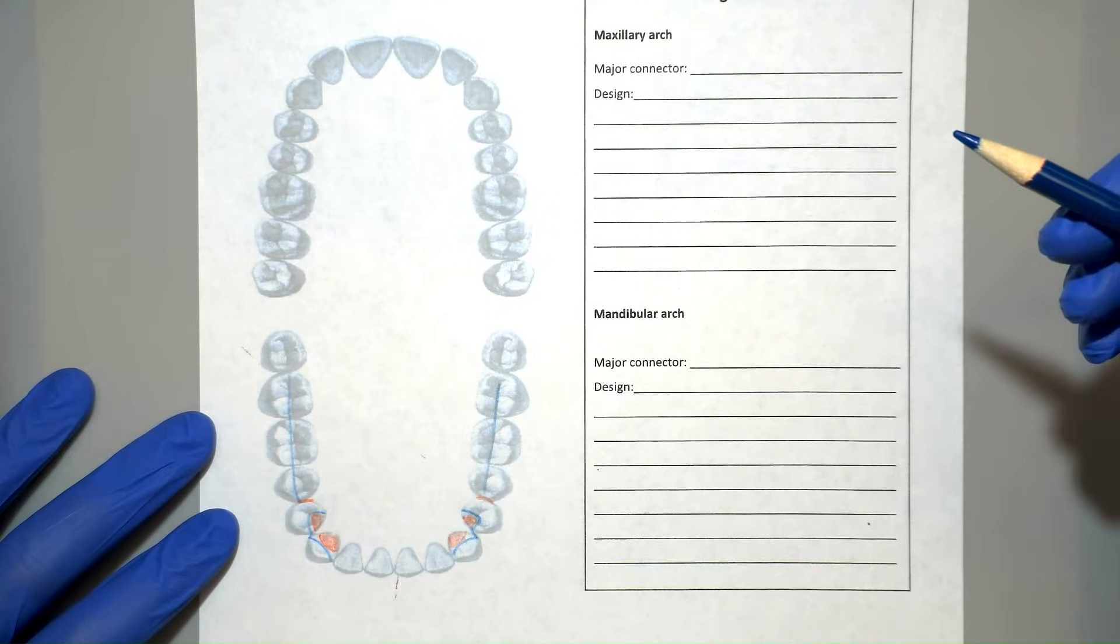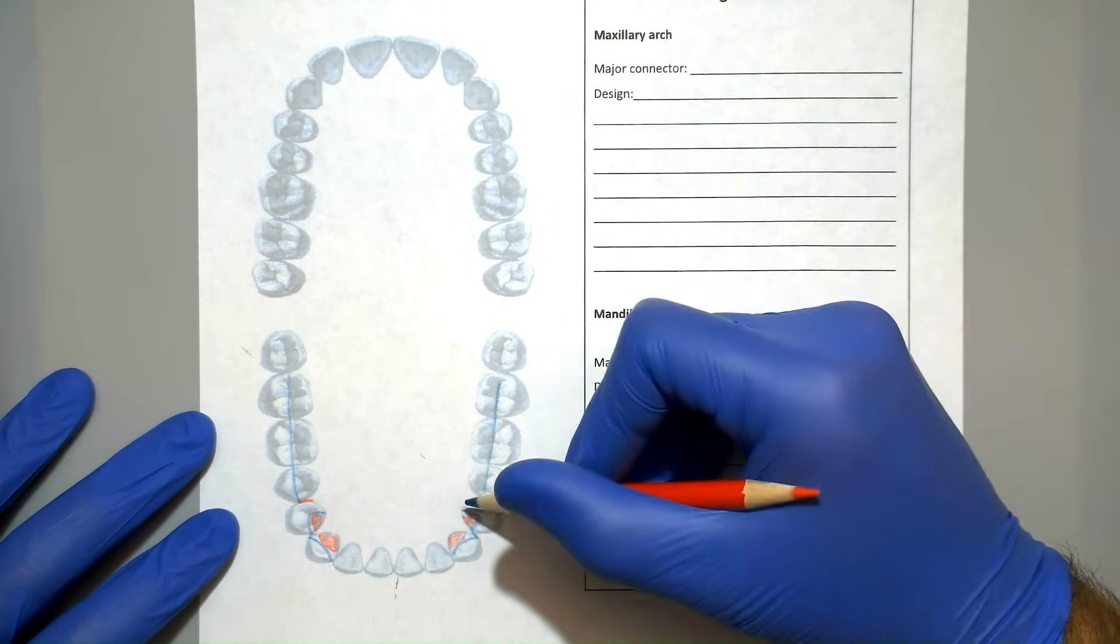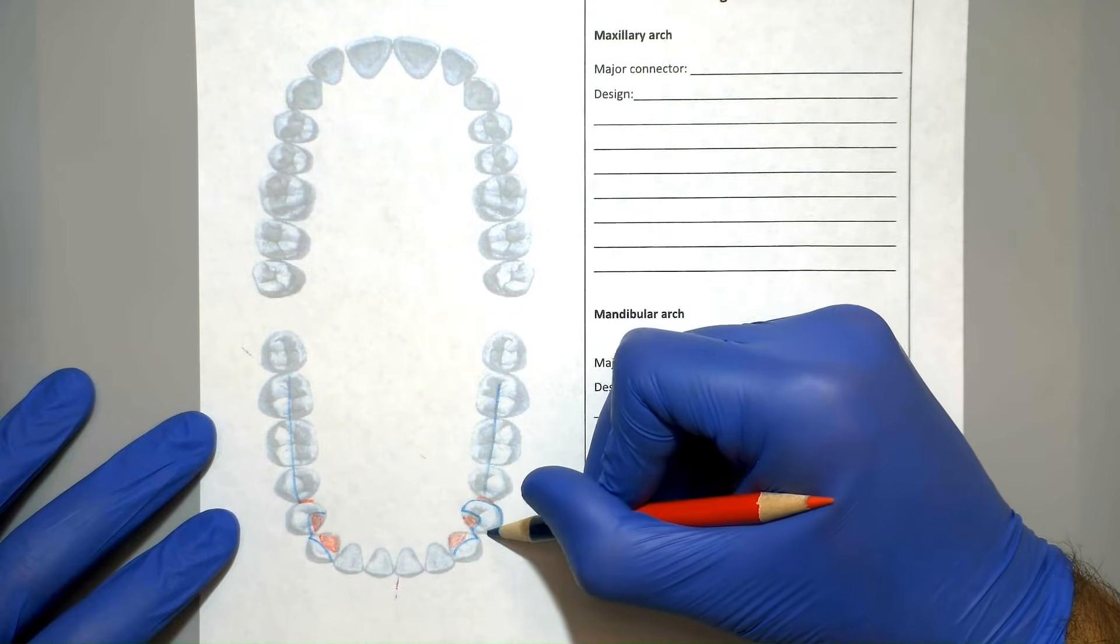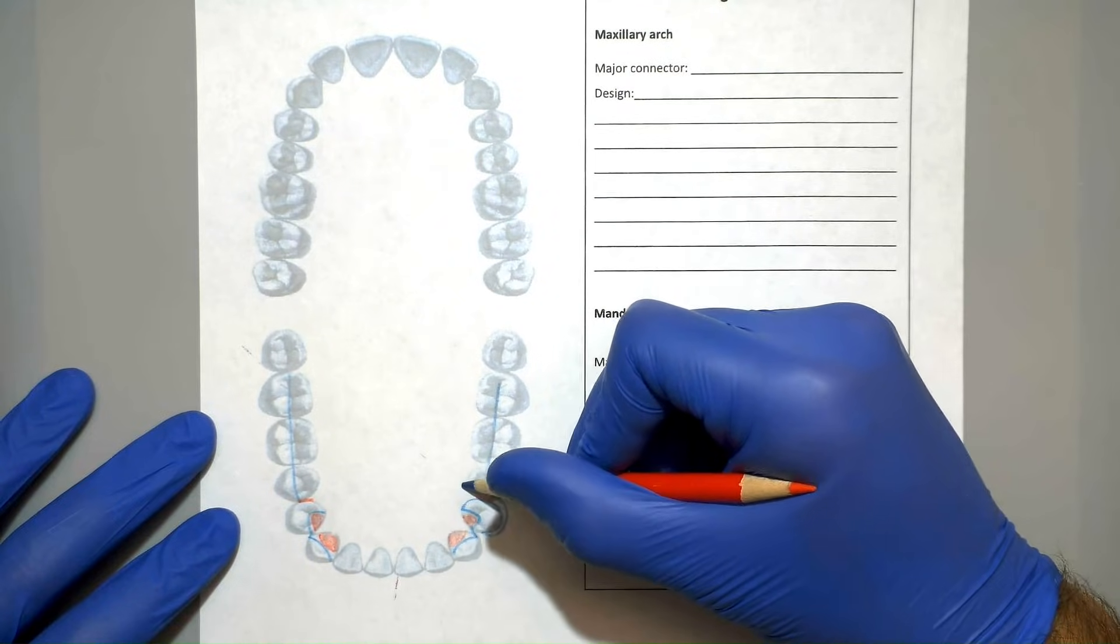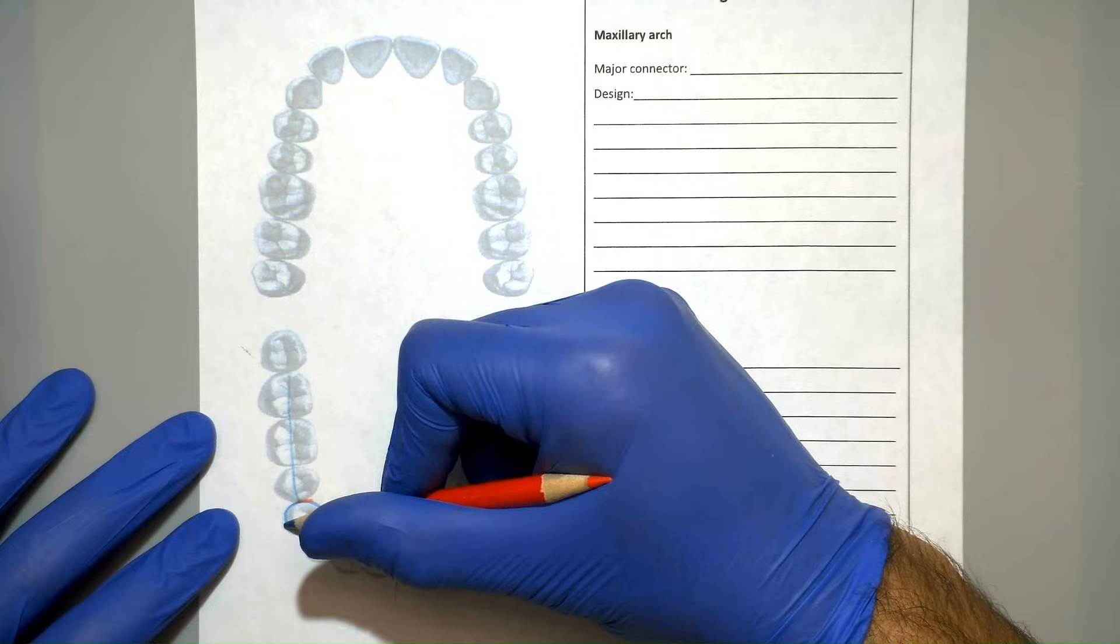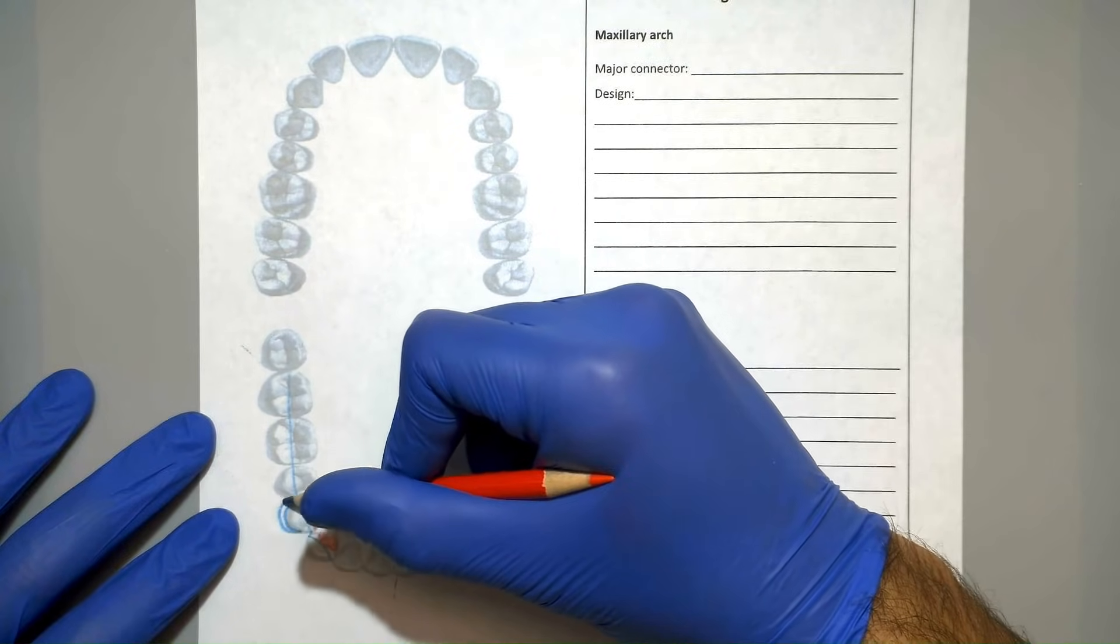We will then go ahead and start drawing the retentive clasps on each of those abutment teeth. We'll draw the cast circumferential clasp to the undercut and on our way back we're going to get on the other side of that guide plane and extend the line a little further. This line is actually going to be part of the finish line later on.